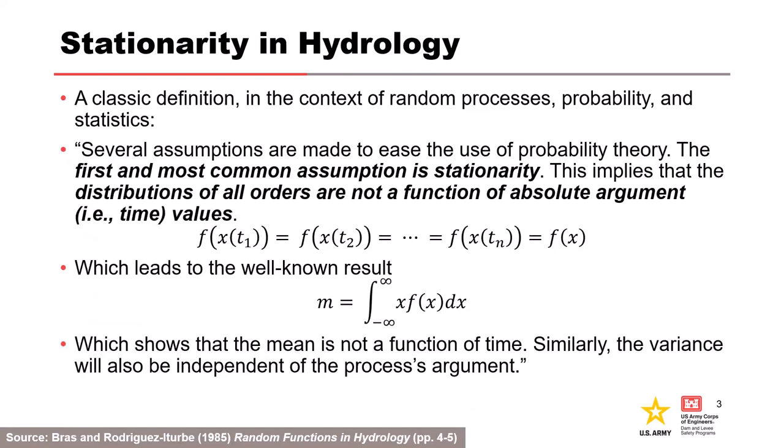If there are any kind of jumps, trends, or periodicity, we term that non-stationary, because those fundamental parameters we use to describe and define the distribution aren't the same for different periods of time. That's essentially what non-stationarity is. There's a formula that basically means the mean is constant if you integrate over all time.